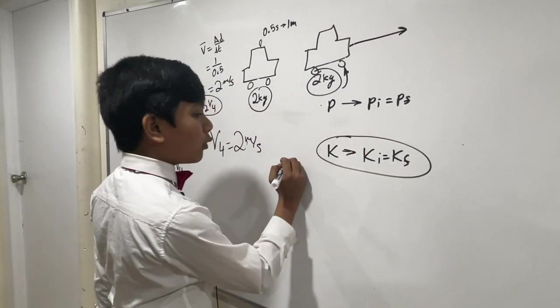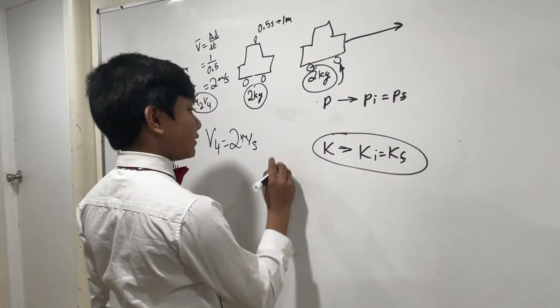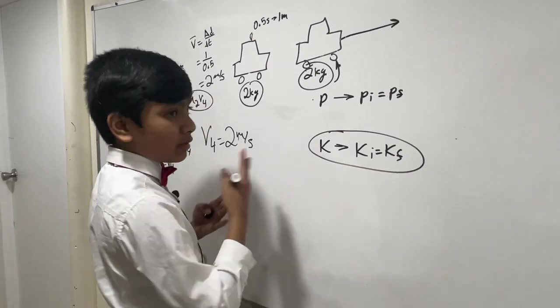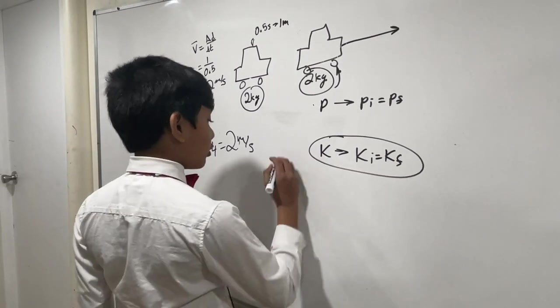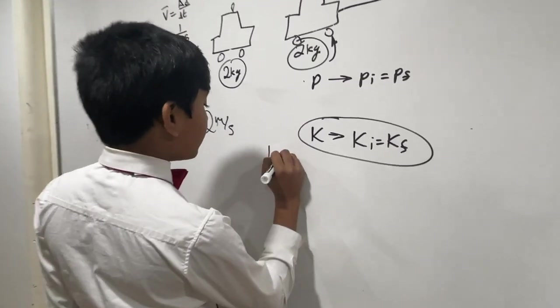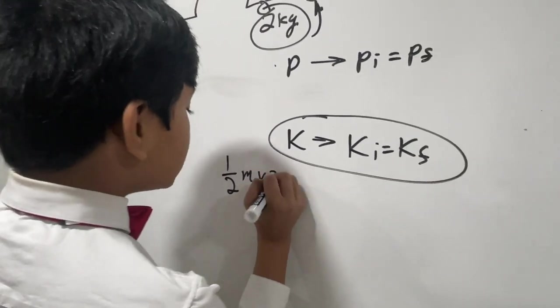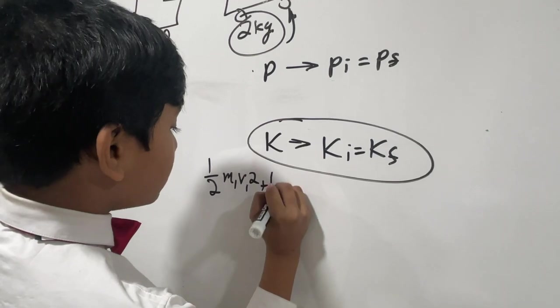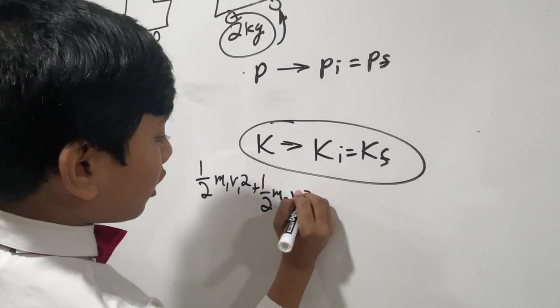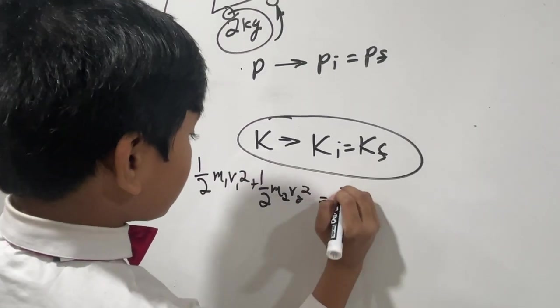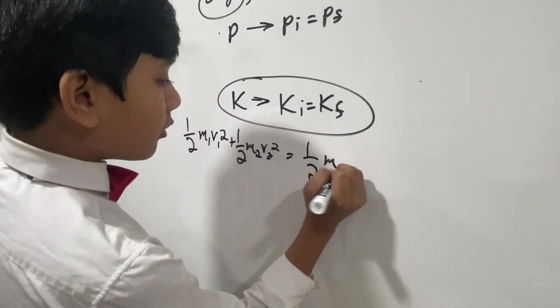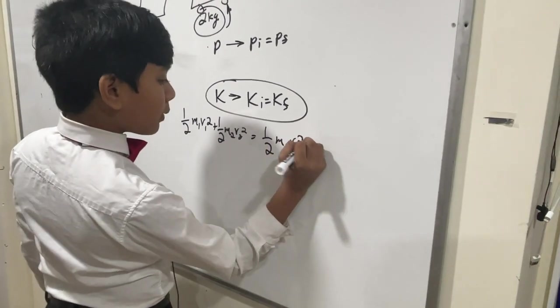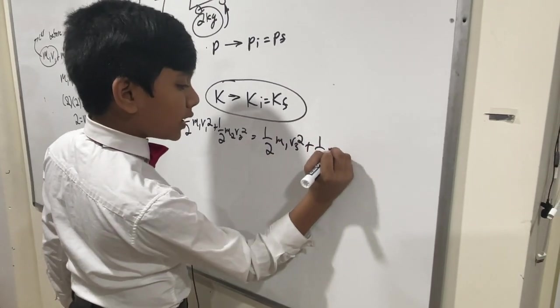Now, let's kind of test this for conservation of kinetic energy, just to see if the principle that I just said was true. So, we have half M1 V1 squared plus half M2 V2 squared. And obviously, this is before. It's equal to half M1 V3 squared plus half M2 V4 squared.